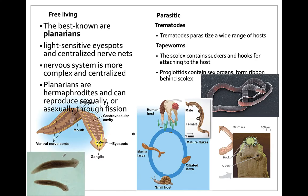Platyhelminthes can be either free-living or parasitic. The best-known free-living flatworms are the planarians — cute organisms with an arrow-like head, two eye spots on top, and a centralized nerve net in the head. These are hermaphroditic, meaning they have both male and female reproductive capacities, but can also reproduce asexually. If you cut a planarian in half, you'll eventually get two planarians: the tail end grows a head and the head end grows a tail, producing two exact clones. They can also pinch off into a head and tail on their own to reproduce asexually.